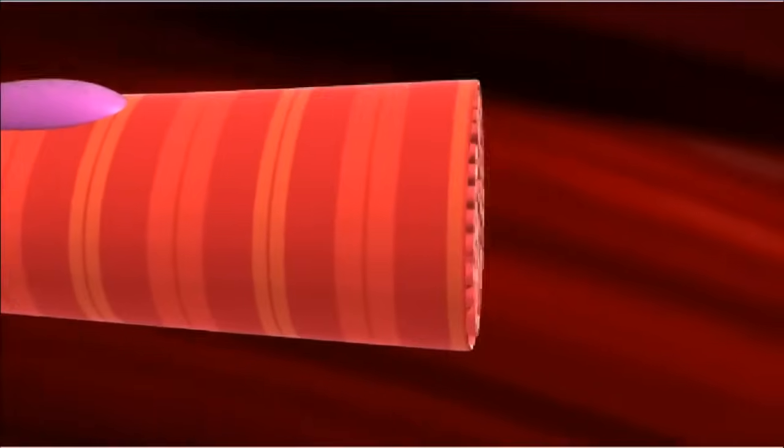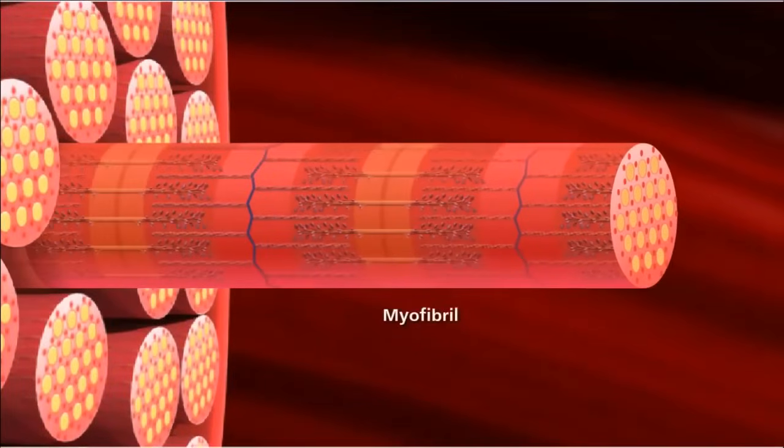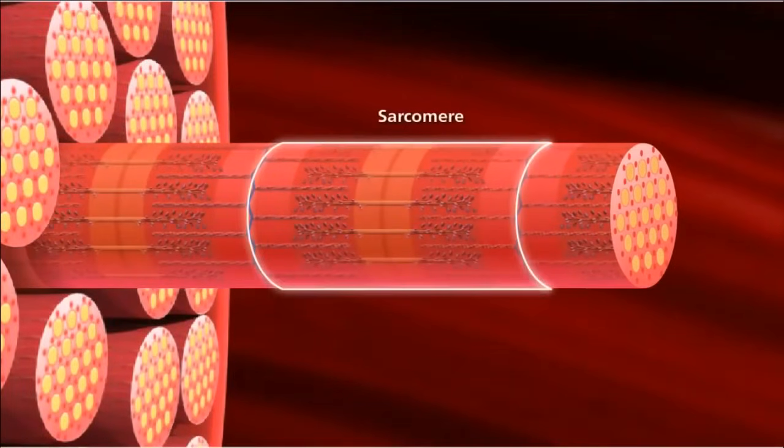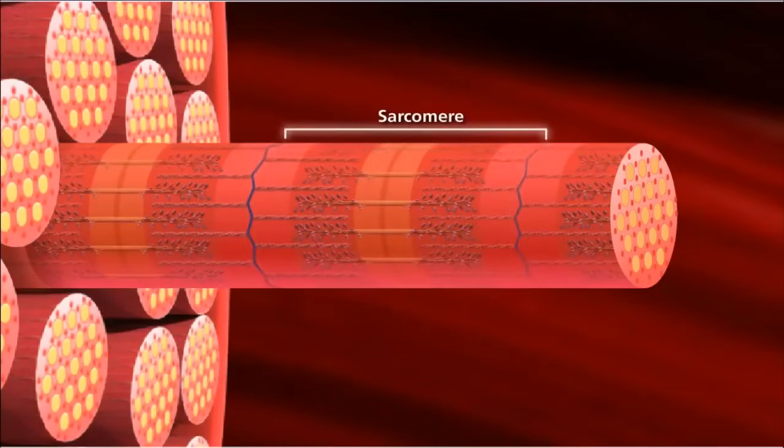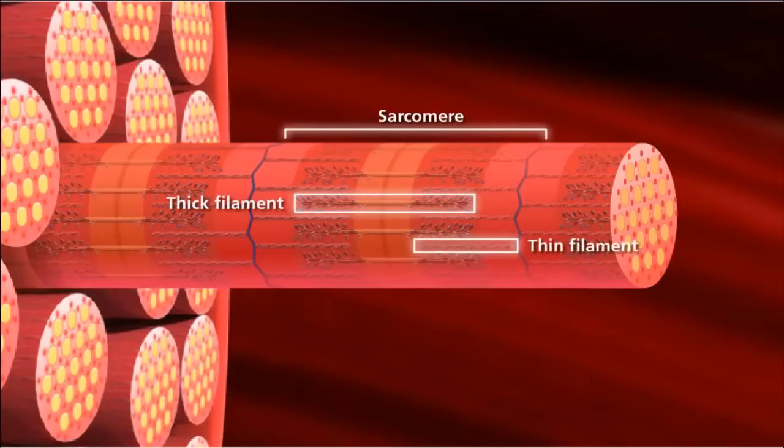Muscle fibers are composed of many myofibrils. A myofibril contains contractile units called sarcomeres. Sarcomeres run adjacent to one another down the length of the myofibril. Each sarcomere consists of alternating thick and thin protein filaments, giving skeletal muscle its striated appearance.